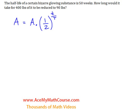The half-life of a certain bizarre glowing substance is 50 weeks. Given our equation, we know where the 50 goes—it goes straight in for the T, which represents the half-life. The question is, how long would it take for 400 pounds of it to be reduced to 90 pounds?